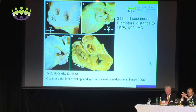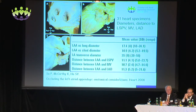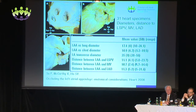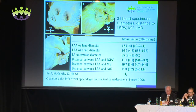We ourselves conducted studies on 31 heart specimens, looking at diameters and distance to the left superior pulmonary vein, the mitral valve, and the left anterior descending coronary artery. The distance between the left atrial appendage and the left superior pulmonary vein ranged from about 5.8 to 23 mm — a huge range — with a mean of 11.1 mm. Distance between the left appendage and mitral valve orifice had a mean of 10.7 mm, ranging from 4.7 to 14.4 mm. And distance between the appendage and the LAD was 11.3 mm, ranging from 5 to 31 mm.